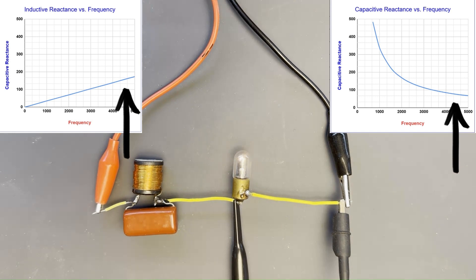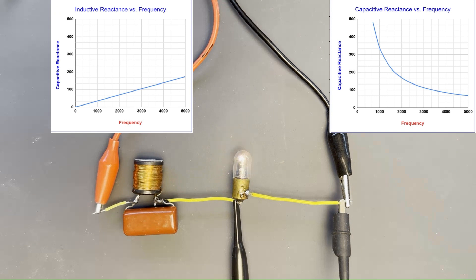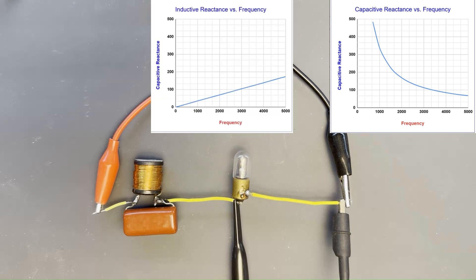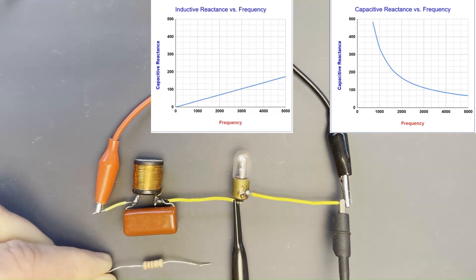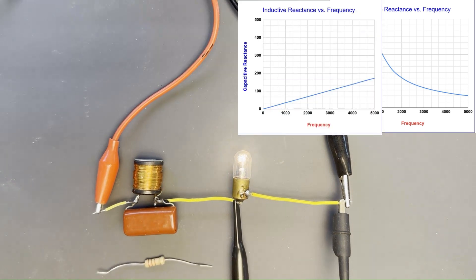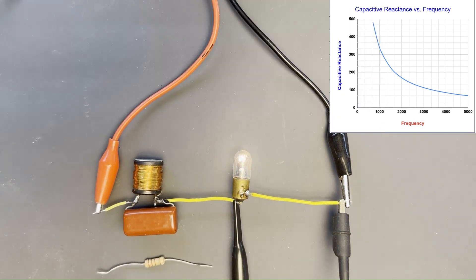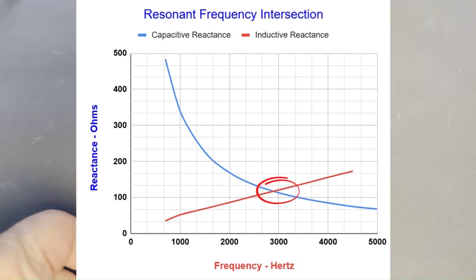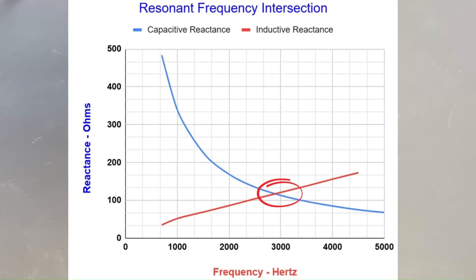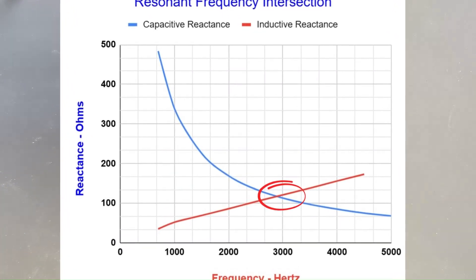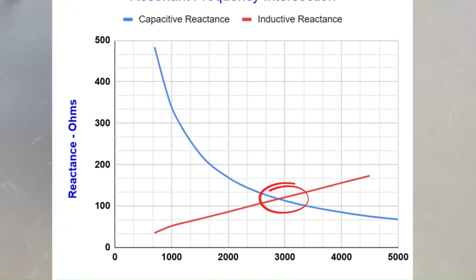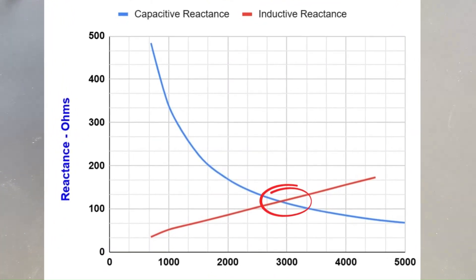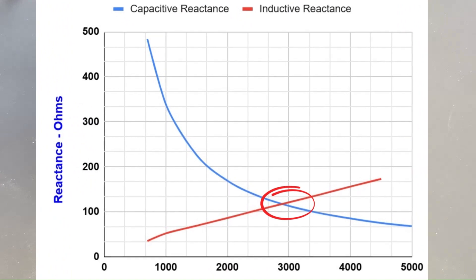The concept of parallel resonance can be illustrated by overlaying these two frequency response curves. The point of intersection is known as the resonant frequency. This is the point at which the inductive and capacitive reactances are equal.